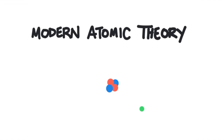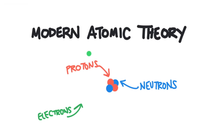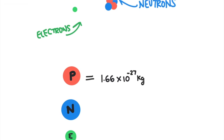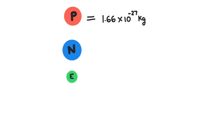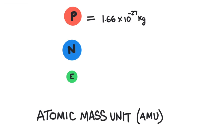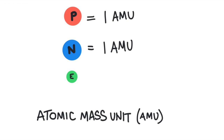First, the atom is composed of three subatomic particles, called protons, neutrons, and electrons. These particles are extremely small, and they have incredibly small amounts of mass. The proton has a mass of 1.66 times 10 to the negative 27 kilograms. These masses are so small that scientists created a new unit to take their place, called the atomic mass unit. Protons and neutrons have essentially the same mass, so they have a mass of 1 amu each.